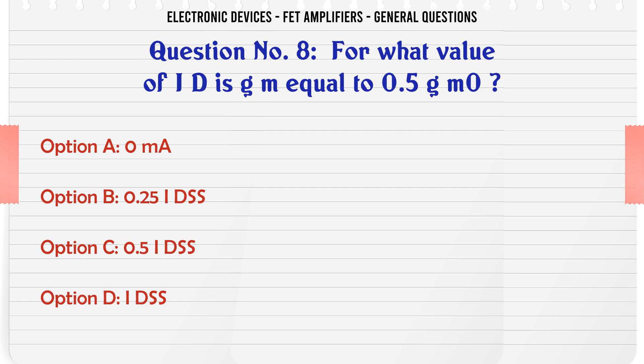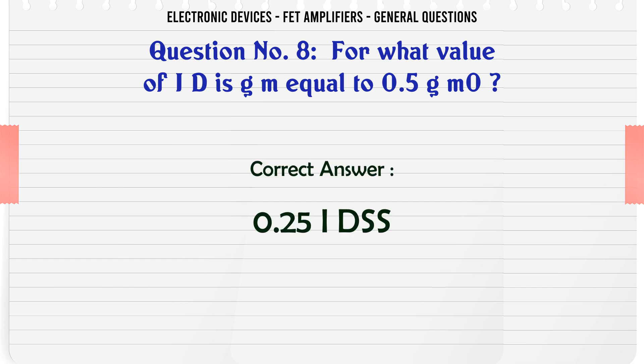For what value of ID is GM equal to 0.5 × GM0? A. 0mA. B. 0.25 IDSS. C. 0.5 IDSS. D. IDSS. The correct answer is 0.25 IDSS.